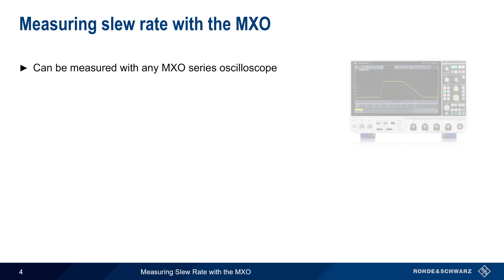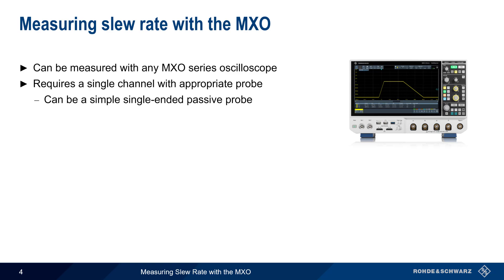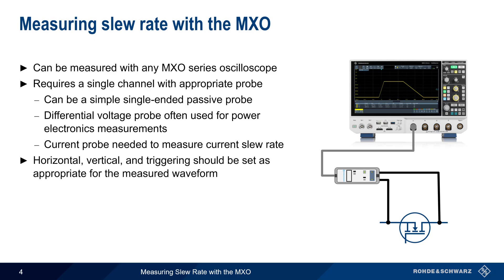Slew rate is easy to measure with any Rohde & Schwarz MXO series oscilloscope. All that's required is a single channel and an appropriate probe. In many cases, a simple single-ended passive probe is sufficient, although differential voltage probes are often used when making certain types of power electronics measurements. A current probe would be needed if measuring the slew rate of a given current. As with all other oscilloscope measurements, the horizontal, vertical, and trigger systems should all be set appropriately for acquiring the measured waveform.